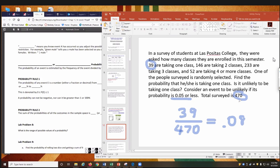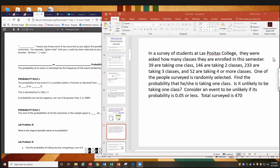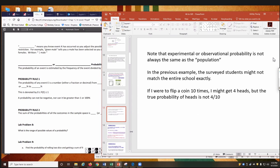All right. Moving on. Oops. Or maybe not moving on. There we go. Okay. How about Skye? Go ahead and read for us. Note that the experimental or observational probability is not always the same as the population. In the previous example, the survey students might not match the entire school exactly. If I were to flip a coin ten times, I might get four heads. The true probability of the heads is not four of ten. Exactly. Thank you. Right? So what you observe or what you do in an experiment is not necessarily the actual true number. So just remember that. If I flip a coin ten times in my experiment, if I get four heads, it doesn't mean the probability of heads is four out of ten. It's an experiment. It's not always gonna be accurate.